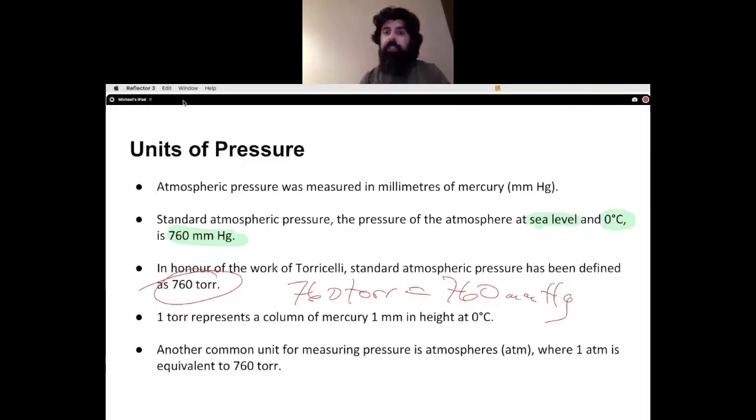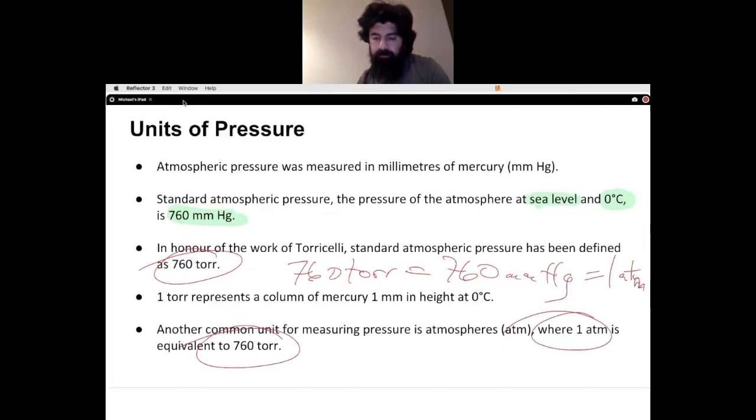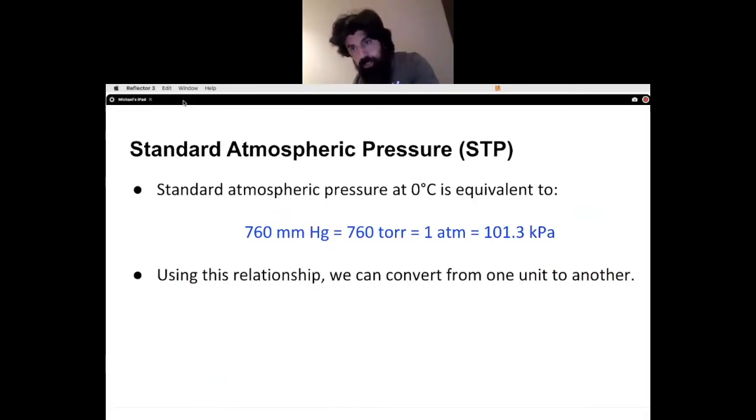We're going to talk a little bit about conversion later on in this chapter. The Tor units also represent, or the millimeters mercury, another set of pressure units known as atmospheres, ATM. So one atmosphere is equivalent to 760 Tor or 760 millimeters of mercury because they're all the same.